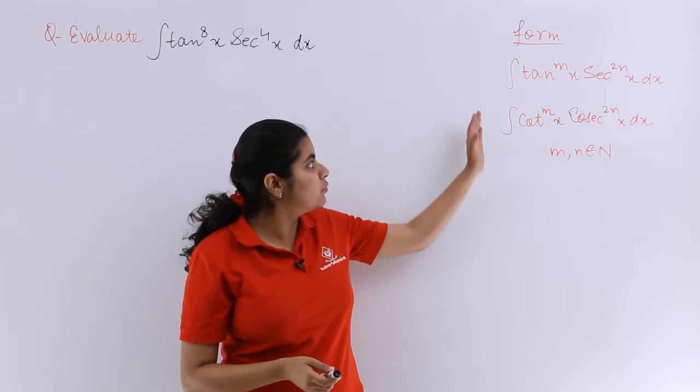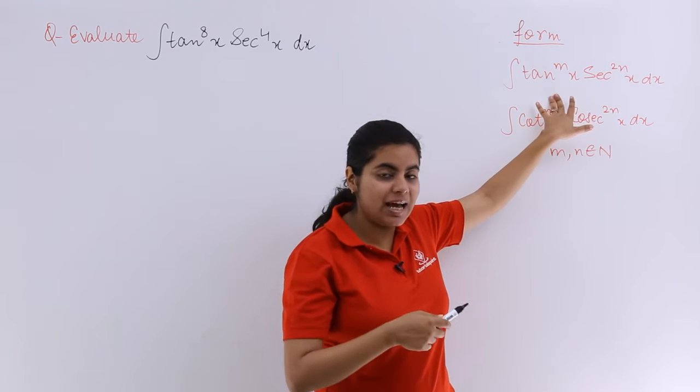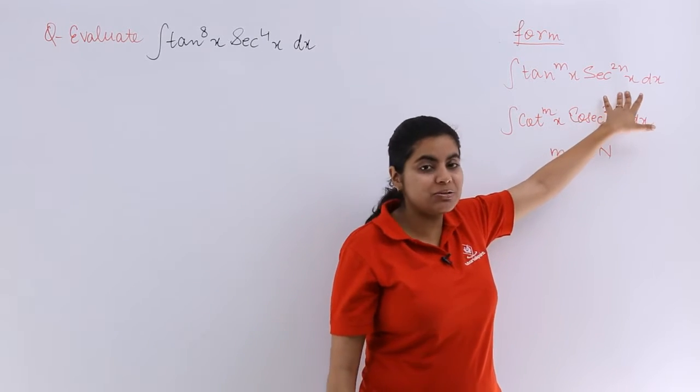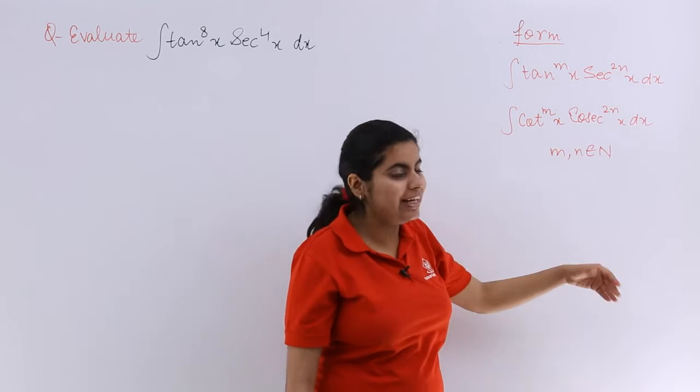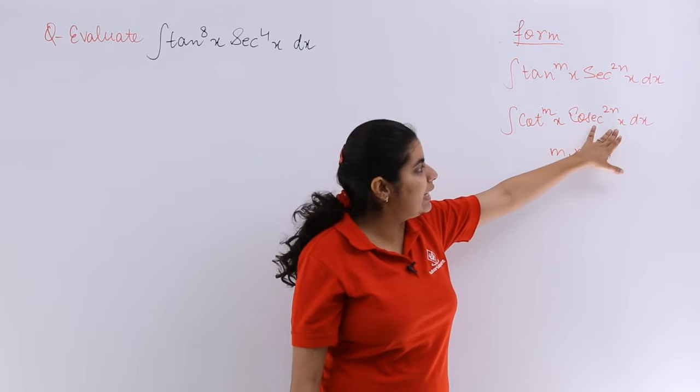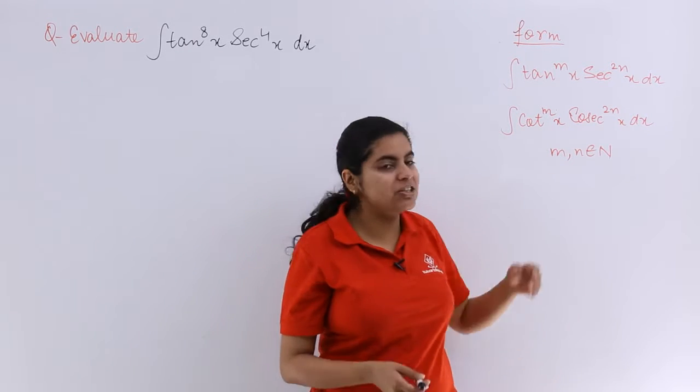This question is based on the form tan^m(x)sec^n(x)dx or the integral of cot^m(x)cosec^n(x)dx, where m and n belong to natural numbers.